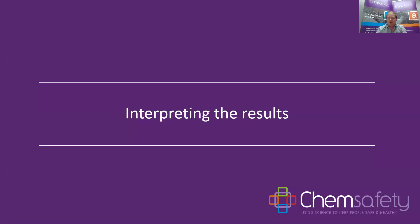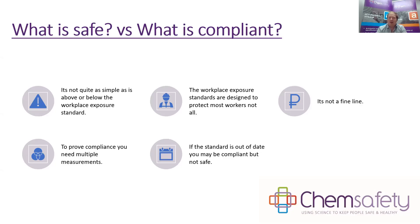So we get results — but interpreting them isn't as simple as: is that number good or bad? What is safe, and what is compliant? And are they necessarily the same thing? It's not as simple as being above or below the workplace exposure standard. If the standard is 100 and I'm at 99, am I suddenly safe whereas at 100 I was unsafe? Not really — it's more or less the same degree of hazard. As a general rule of thumb, we want to be taking action if we get above 50% of that limit, because due to random variation you could sometimes be over it.